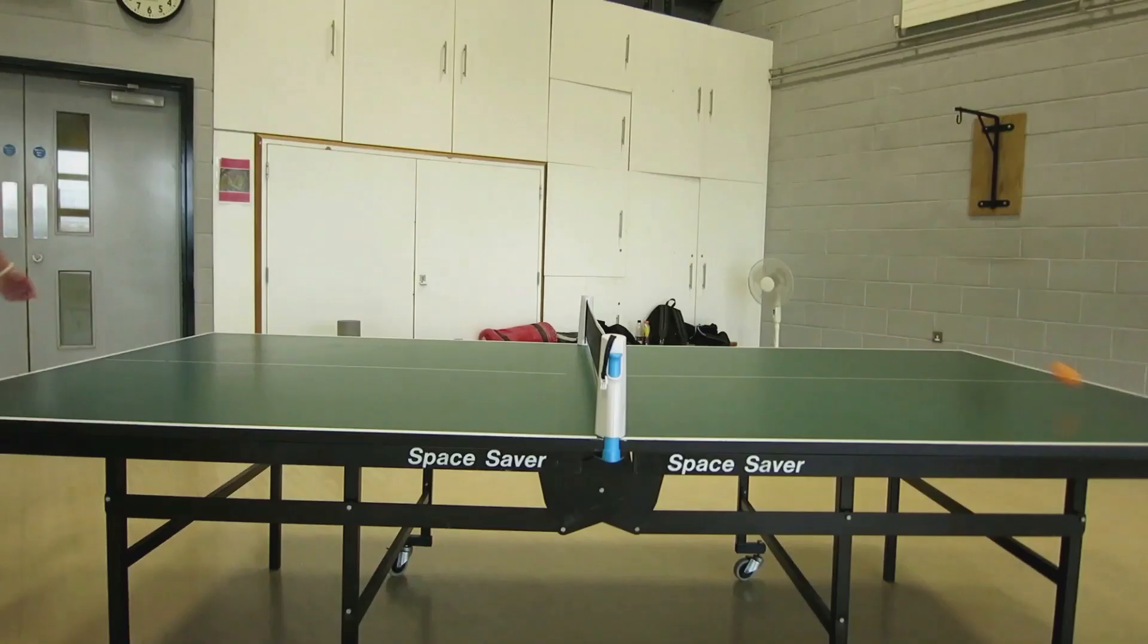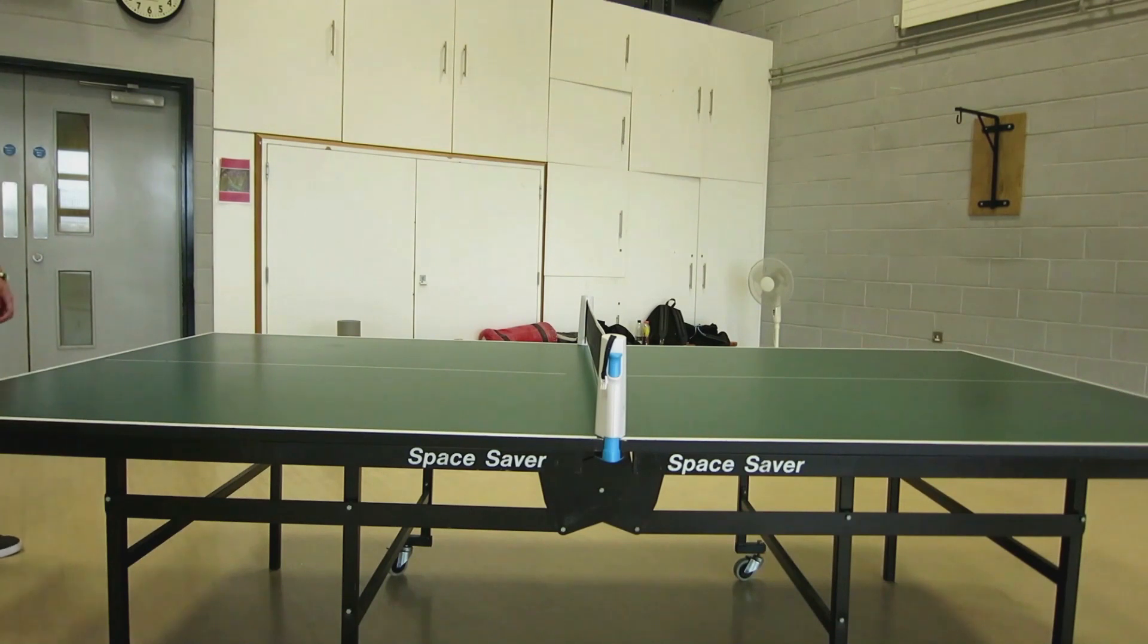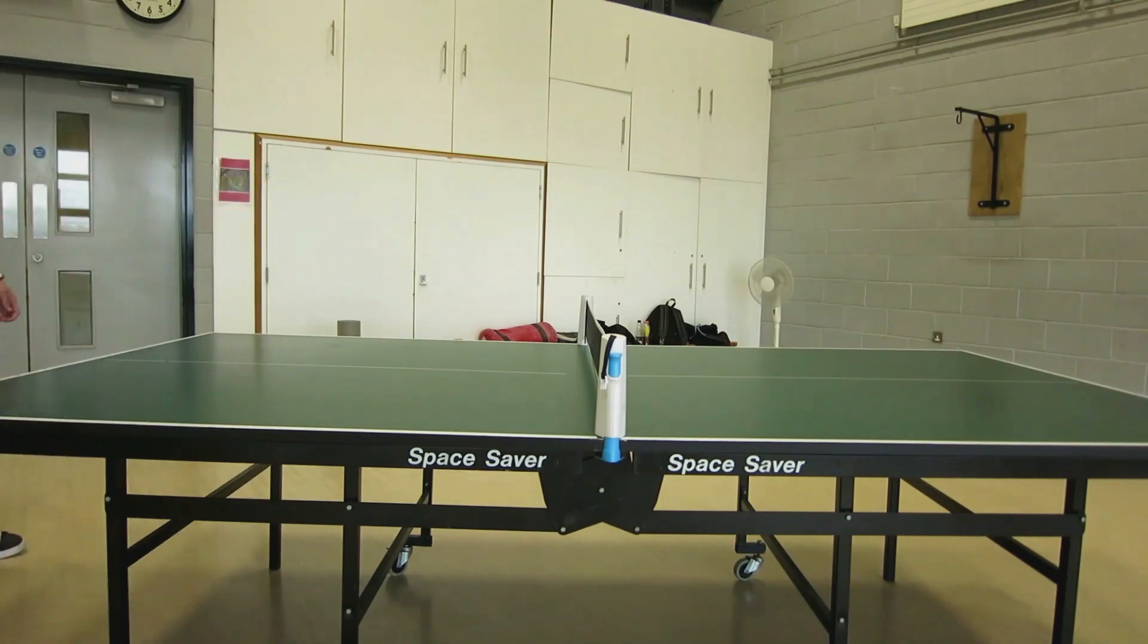If we replay it again in slow motion, you can see the player on the left has to step in to slice it as the ball is moving in the air, and this is what we call the Magnus effect.